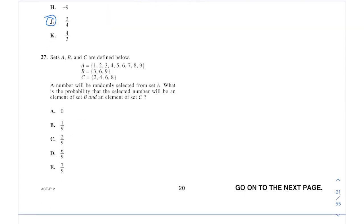A, B, C. Probability selected number will be an element of set B and an element of set C. So that would only include the six. So if you're selecting, that's one result out of one, two, three, four, five, six, seven, eight, nine, one out of nine.